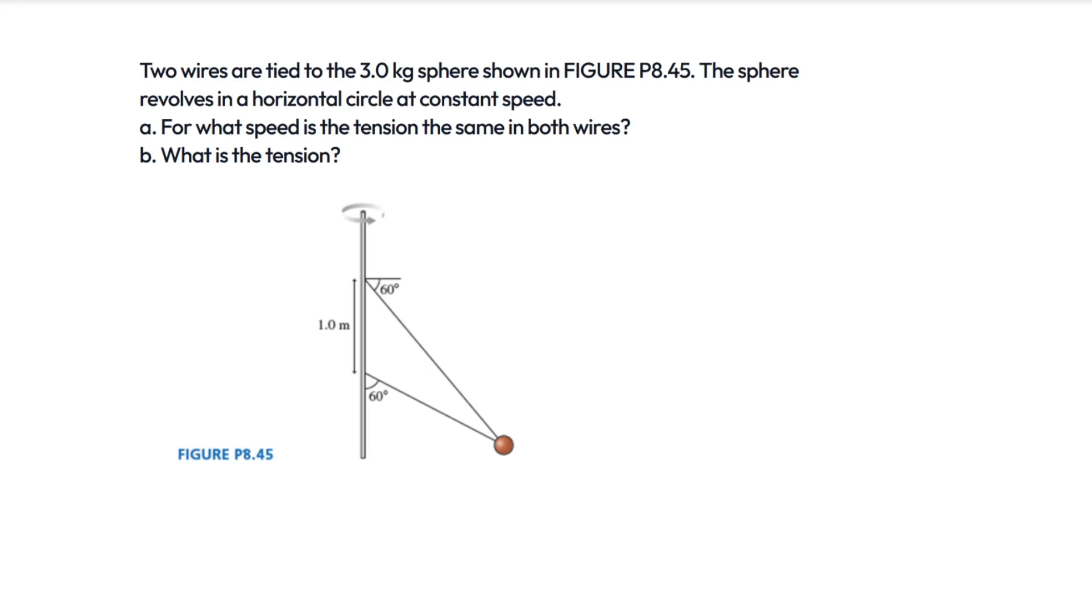We have two wires, the top one I'll label A, and the bottom one I will label B. And we're given that the tension in A is equal to the tension in B. Now part B asks us to find what the tension is, and I think we can just go ahead and do that first because this should be relatively simple.